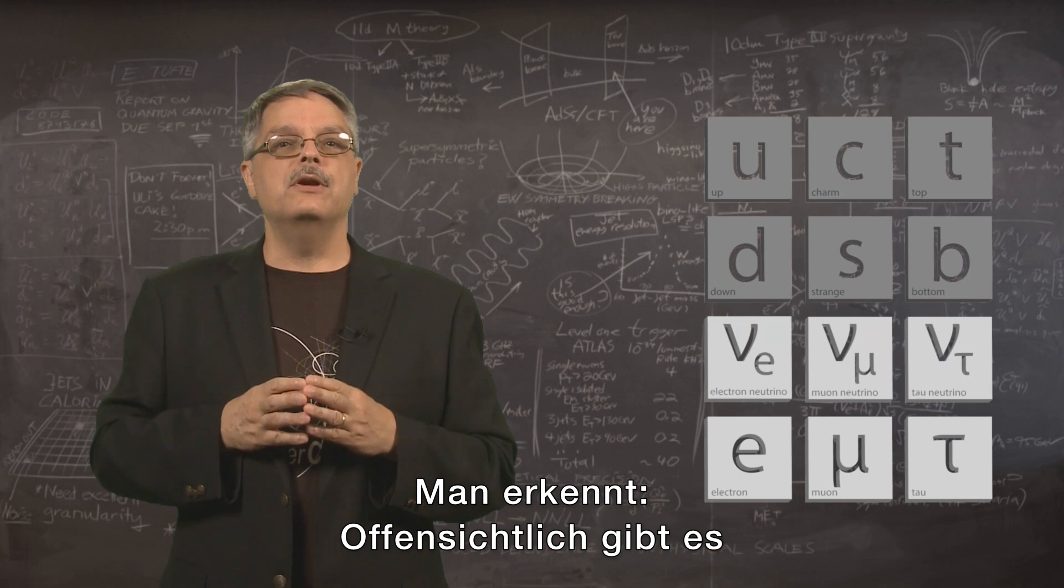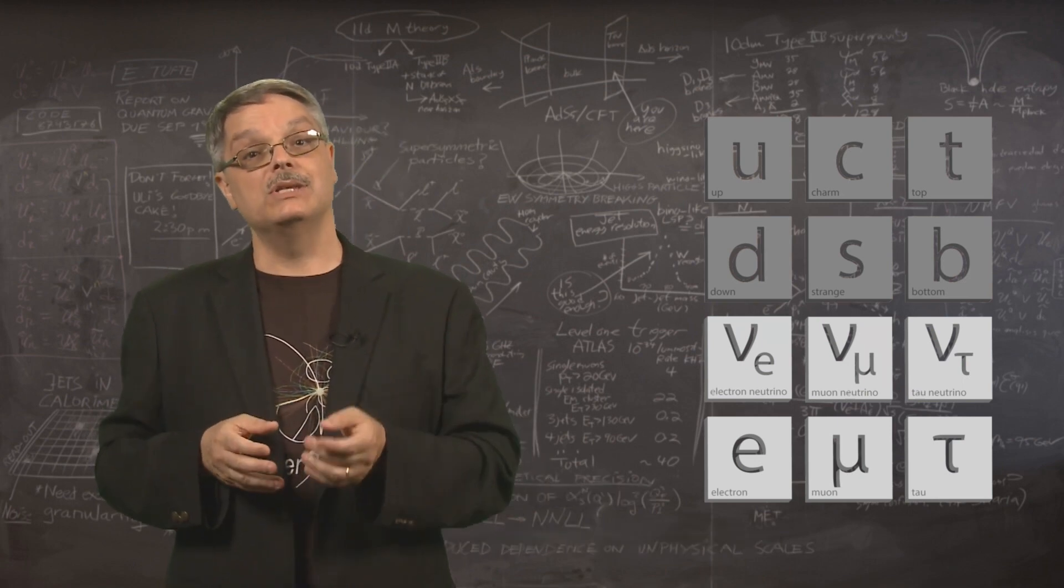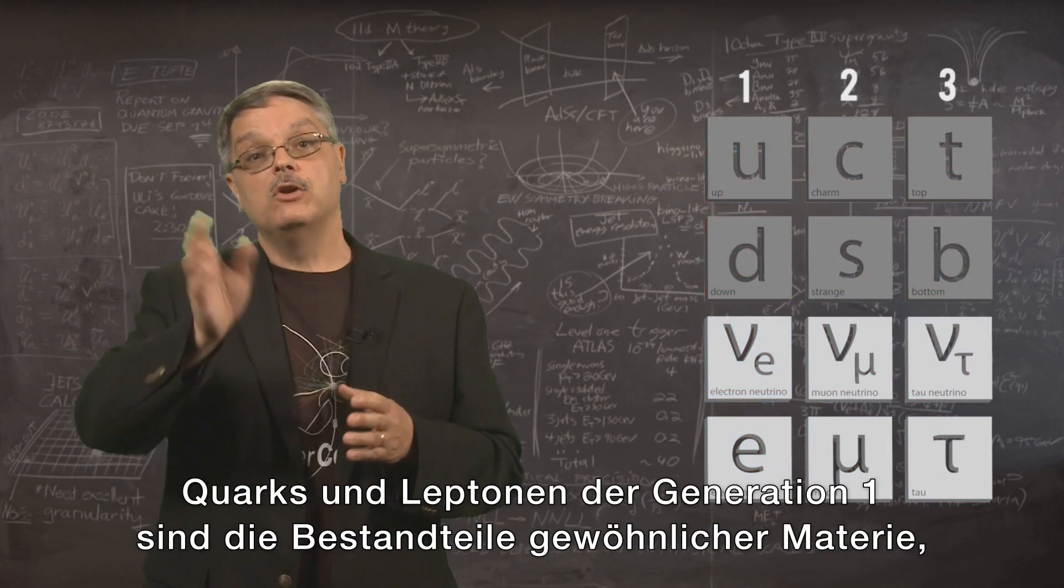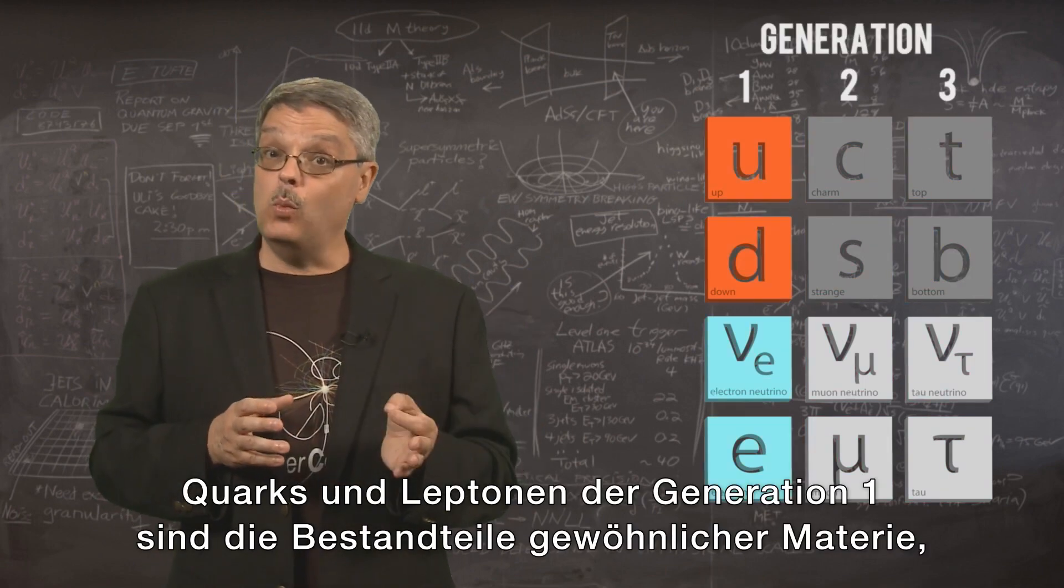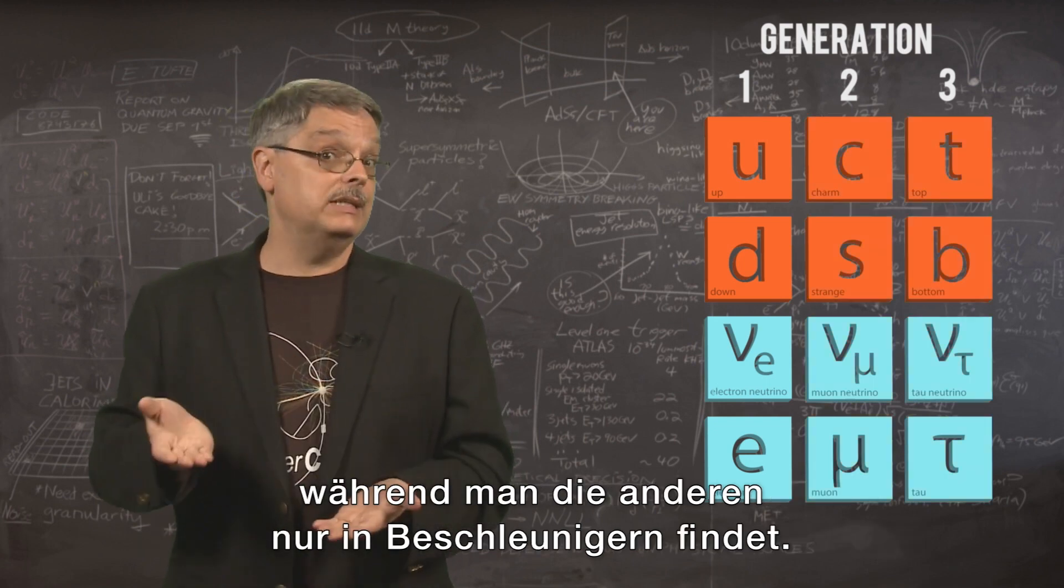You'll notice that there appear to be three distinct carbon copies of the quarks and leptons, and we number them 1, 2, and 3. The quarks and leptons of generation 1 are found in ordinary matter, and the others are only found in accelerators.